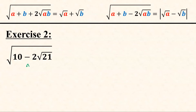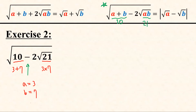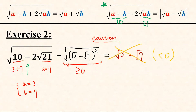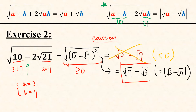Now let us take a look at the second problem. Since we have a negative sign here, we use the other formula. We need two numbers whose sum is 10 and whose product is 21. We can see that 3 plus 7 equals 10 and 3 times 7 equals 21. So we let a equals 3 and b equals 7, giving us (square root of 3 minus square root of 7) squared. But since the square root must be non-negative, we must not write square root of 3 minus square root of 7, as it is negative. Instead, the answer is square root of 7 minus square root of 3, which is the absolute value of (square root of 3 minus square root of 7).